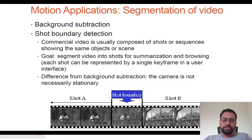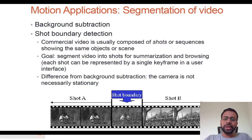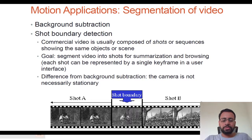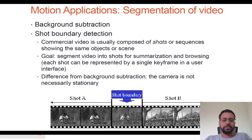Another application is segmentation — finding out the boundaries of different shots that are continuous. For example, at the bottom of the slide you can see an example where there is a sudden transition between shots. If you are tracking how pixels have moved from one frame to the other and you see a sudden movement beyond a particular threshold, that is where you could figure out there is a sudden transition. This could be done automatically in a given video sequence.